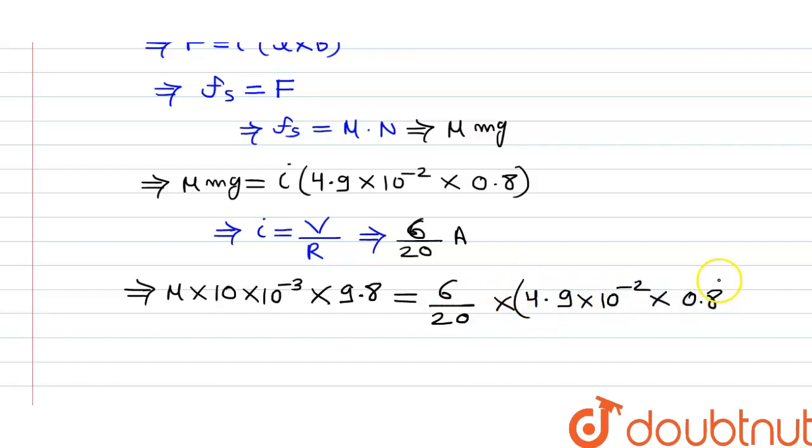Now we can easily find out the coefficient of friction from this equation. So we will get μ is equal to 0.3 multiplied by 0.8 multiplied by 10 raised to minus 2 divided by 2 into 10 raised to minus 2.